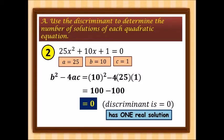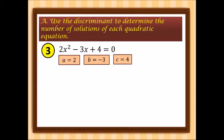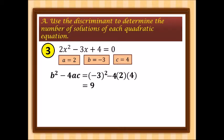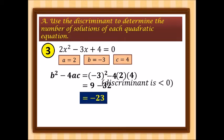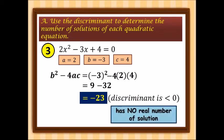Third example: a is 2, b is negative 3, and c is positive 4. Substituting into the formula: negative 3 squared minus 4 times 2 times 4 — we have 9 minus 32, which gives us negative 23. The discriminant is less than 0, therefore it has no real number solution.